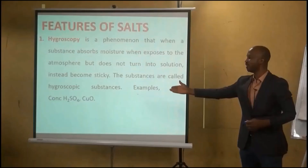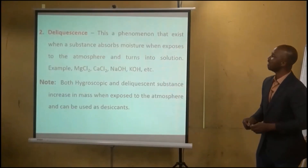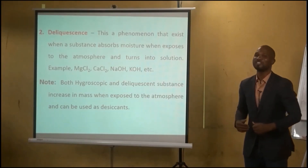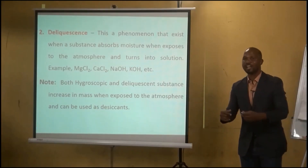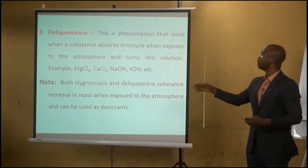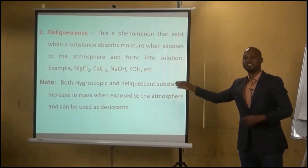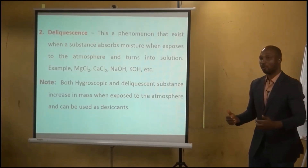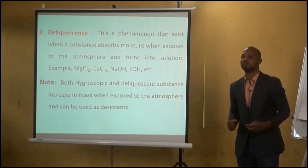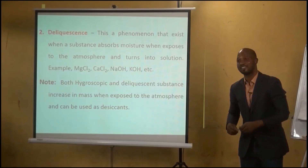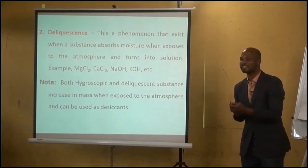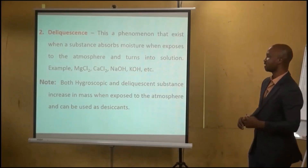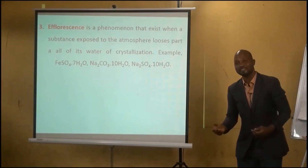Deliquescence is slightly different — it is a phenomenon where a substance absorbs moisture from the atmosphere and turns into a solution. Examples are magnesium chloride, calcium chloride, sodium hydroxide, and potassium hydroxide. Note that hygroscopic and deliquescent substances increase in mass when exposed to the atmosphere due to absorbed water, and are used as desiccants or drying agents — similar to the silica gel found in new shoe boxes.